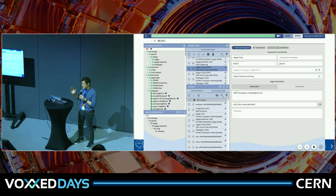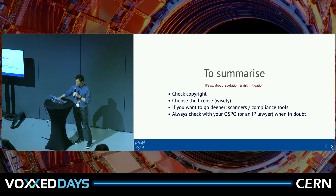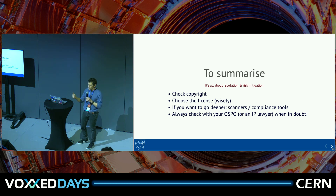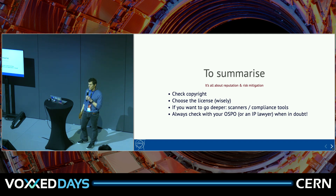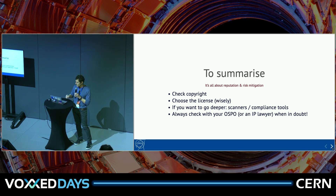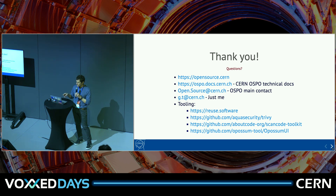To summarize: as lawyers would say, this is all about reputation and risk mitigation — you want to minimize the risk of being sued or being seen as someone who doesn't do things properly. Check copyright, choose the license wisely, and if you want to go deeper there's no lower bound to how deep you can go. You can check with your institution or an intellectual property lawyer when in doubt. At CERN's OSPO we are lucky to have an IP lawyer who raises things that technical people don't always think about. I've put a few references to tooling, and the CERN Open Source Program Office is also interested in collaborating with external parties. Thank you.